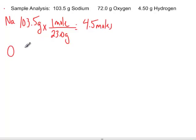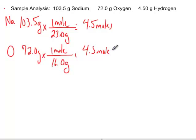When we do oxygen, we have 72.0 grams. You look on the periodic table and one mole of oxygen weighs 16.0 grams. Do the math and once again we get 4.5 moles. Looks like those two are a one-to-one ratio.